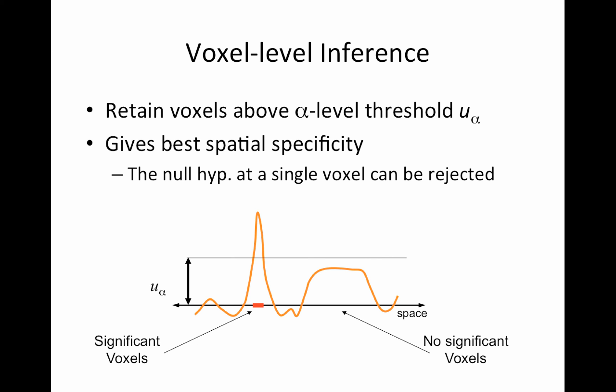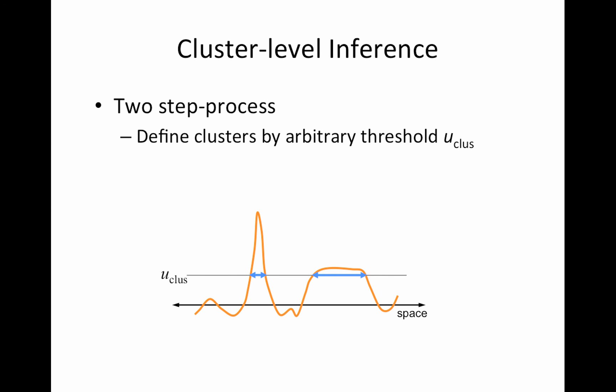So the benefit of a voxel level inference is that it gives you the best spatial specificity. You can actually say something about a single voxel. You can accept or reject the null for that single voxel. Sorry, I failed to reject or reject.